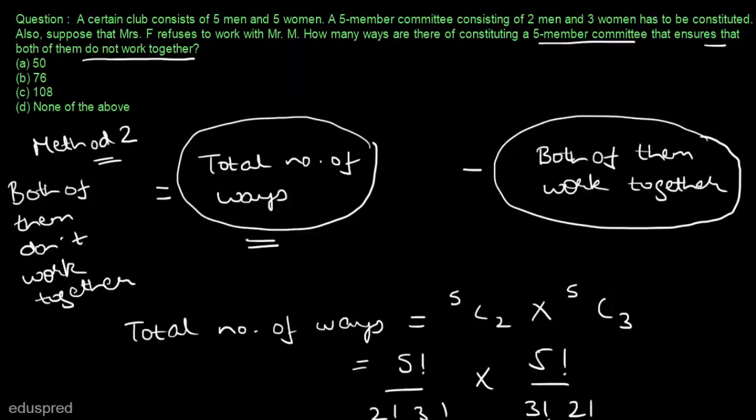This is method number 2 to solve this question, and it is the preferred method for these types of questions. Method 1 involves too many cases — we made 3 cases here, and more cases means more time and a higher probability of making a calculation error. Method 2 takes less time and the probability of making an error is relatively low, so we prefer it for these types of questions.